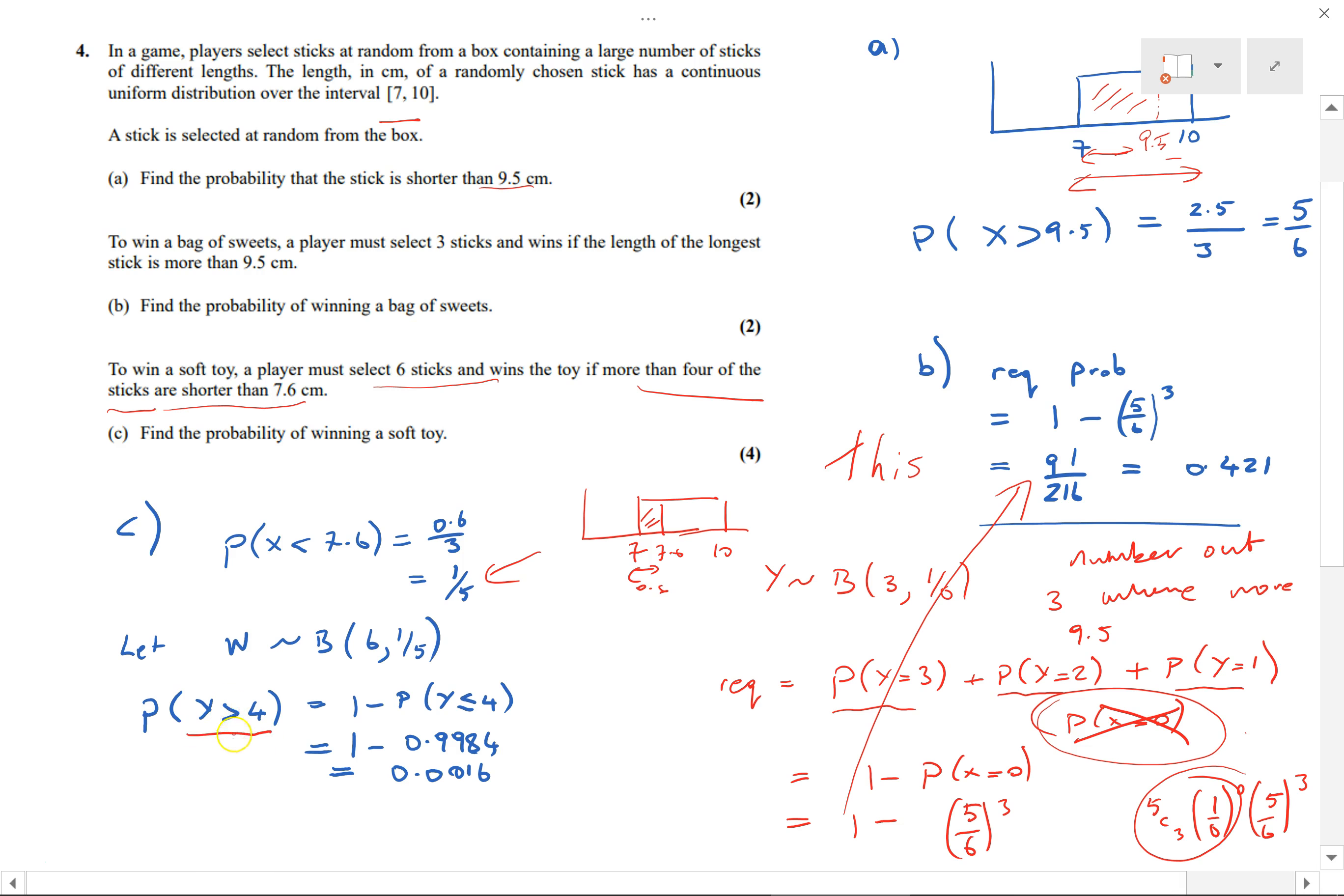Be careful with the inequality because we could also write Y is greater than or equal to 5. Anyway, that comes to 1 minus P(Y equals 4), and we get this number from tables. There are tables for n=6 and p=1/5, and then we can get that as our answer.